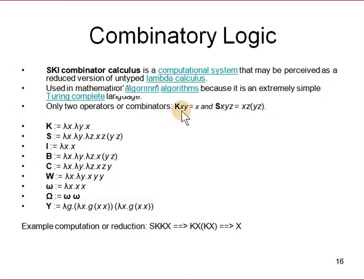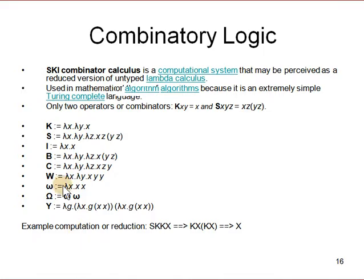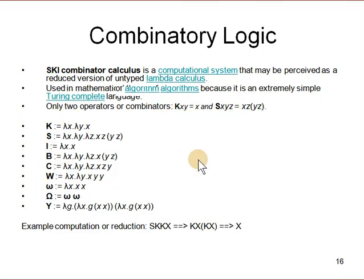There are only two core operators: K and S. Operator K takes two arguments X and Y and projects the first one, returning X. Operator S takes three arguments X, Y, Z and applies X applied to Z, to Y applied to Z. Using S and K you can define a whole bunch of operators — for example, I is lambda X.X, the identity function. You get a string of S and Ks, reduce it repeatedly, and eventually get an output. S K K X eventually reduces to X. Nothing else is needed but the S and K operators; the rest are just definitions. This is also as powerful as Turing machines.